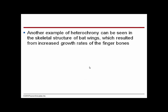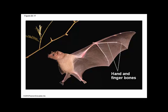Another example of heterochrony can be seen in the skeletal structure of bat wings, which resulted from an increase in the growth rate of finger bones. Heterochrony is responsible for the increased total length of hand and finger bones in a bat compared to other animals. These are developmental genes causing differences in evolved mammals.